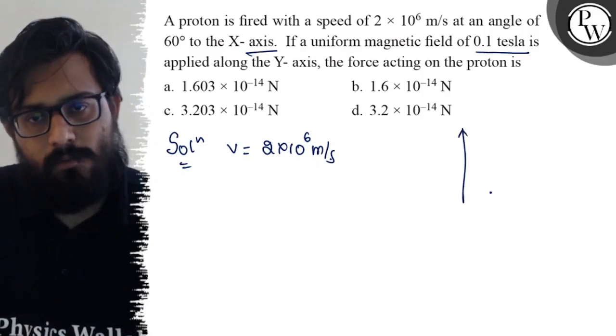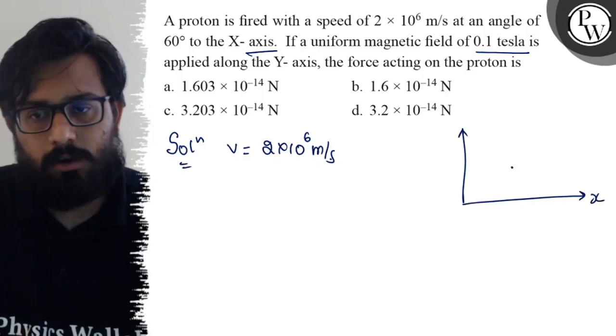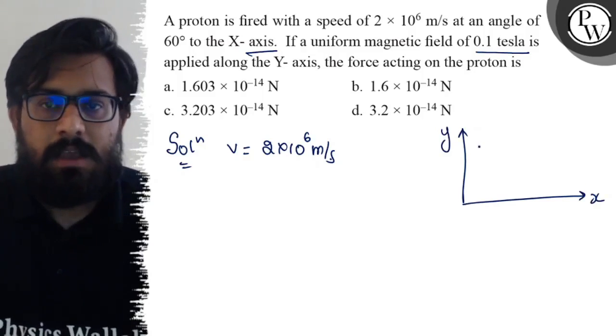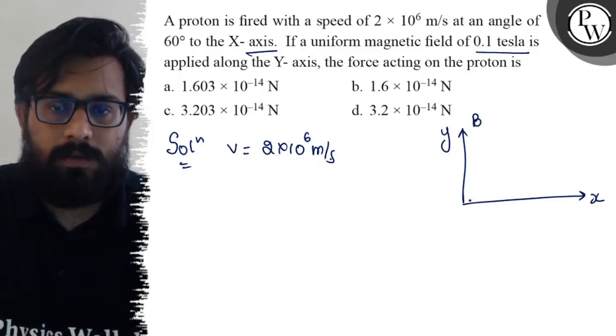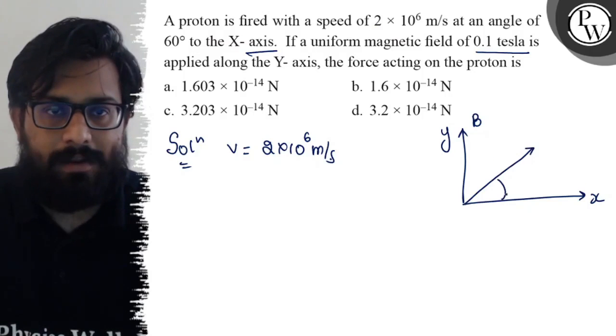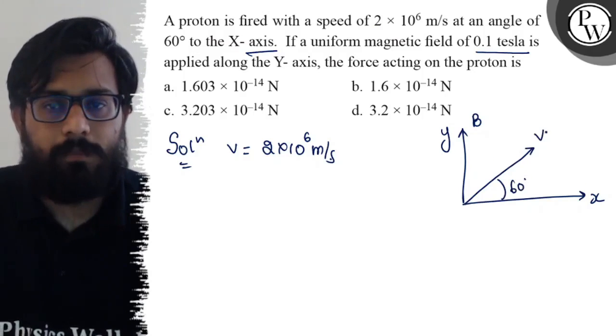See, magnetic field is y-axis along. Let's draw the Cartesian coordinate system, the x-axis, the y-axis, magnetic field is y-axis. And I have fired with the velocity, this makes an angle of 60 degree with the x-axis.